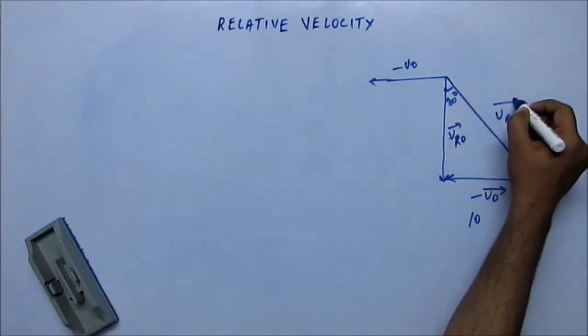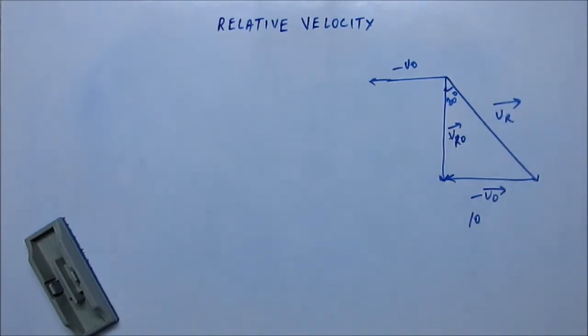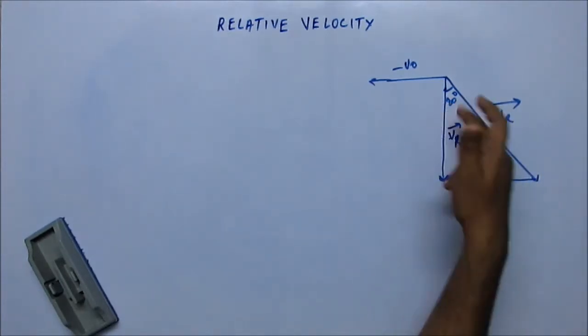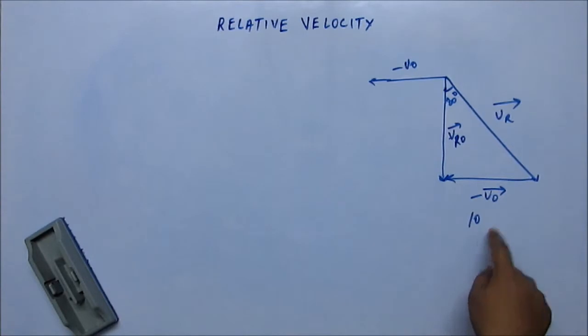This is VR vector. We have to find the magnitude of VR. Finding magnitude of VR is pretty easy because this is a right angle triangle. This is one angle we know and this is one side we know, so finding the third side is simple.